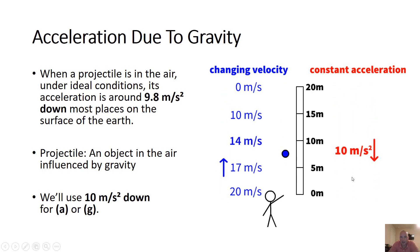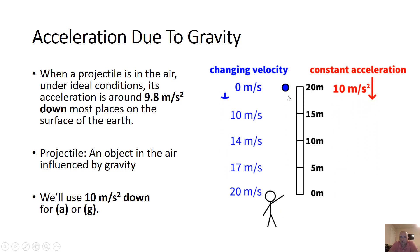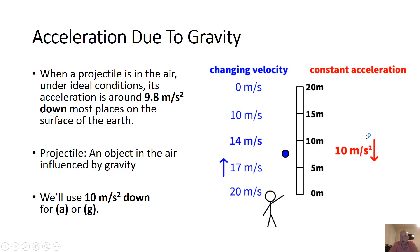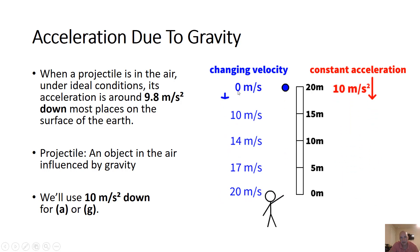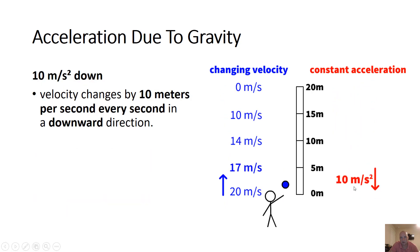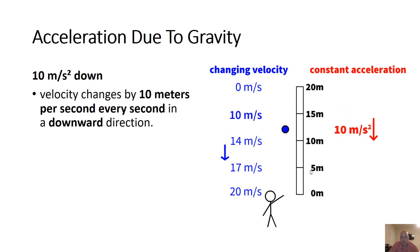Velocity changes because acceleration due to gravity stays the same. It's always 10 meters per second squared — it doesn't matter if you throw an object up, at the top, or wherever it is. If an object is free in the air, it's going to be accelerating downwards, changing its velocity by 10 meters per second every second. What this does is slow down an object on the way up and speed up an object on the way down. Acceleration is never changing; it's the velocity that's changing.